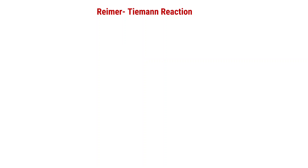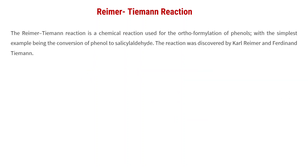The Reimer-Tiemann reaction is a chemical reaction used for the orthoformylation of phenols. Orthoformylation of phenols is happening in the Reimer-Tiemann reaction. The simple example is the conversion of phenol to salicylaldehyde. In this reaction, phenol is converted into salicylaldehyde — the final product in the case of the Reimer-Tiemann reaction.